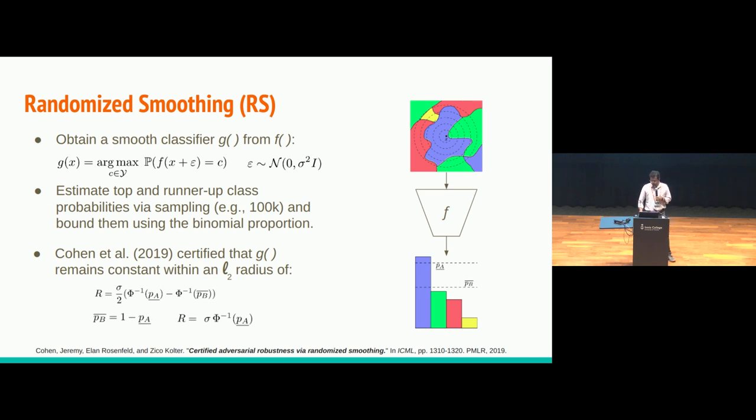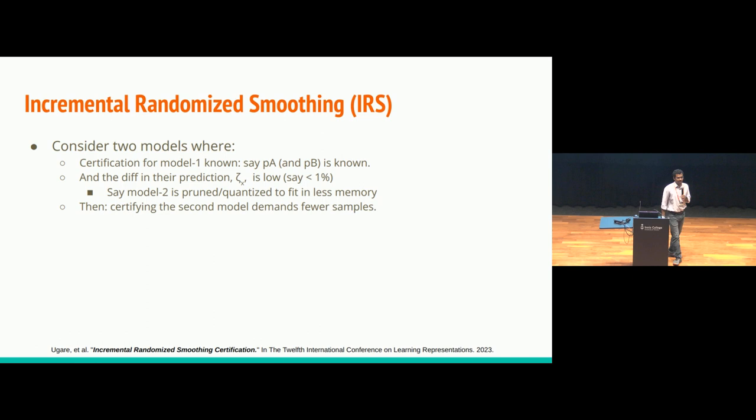In our case, we exploited this method, incremental randomized smoothing. In this case, suppose that instead of one model, we have two models. And we know the certification information from the first model. And the second model is somewhat similar to the first model. In this paper setting, they argued that the second model could be a pruned version or quantized version where weights are pruned or quantized so that it can fit in smaller memory.